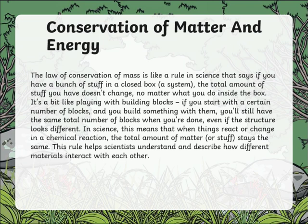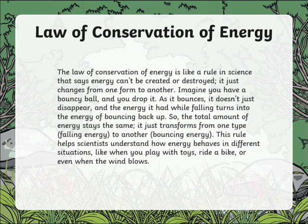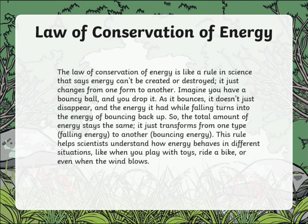The law of conservation of energy says energy can't be created or destroyed — it just changes from one form to another. Imagine you have a bouncy ball and you drop it: as it bounces, the energy it had while falling turns into the energy of bouncing back up. So the total amount of energy stays the same; it's just transferred from one type — falling energy — to another type — bouncing energy. This rule helps scientists understand how energy behaves in different situations, like when you play with toys, ride a bike, or even when wind blows.